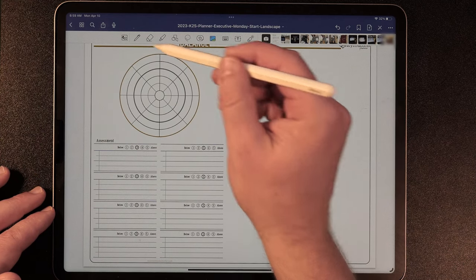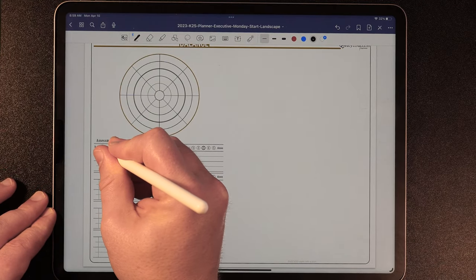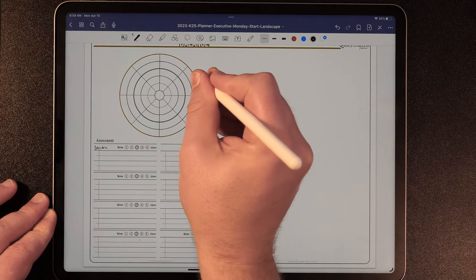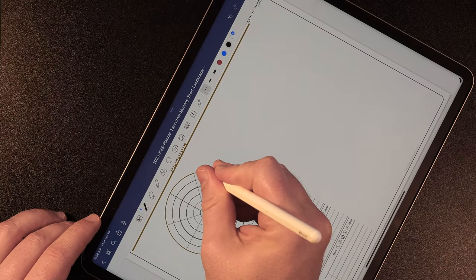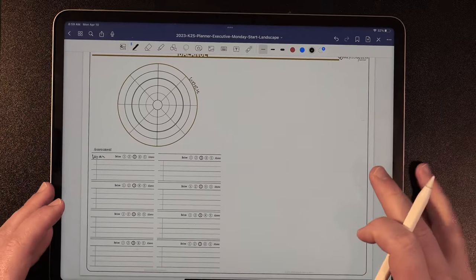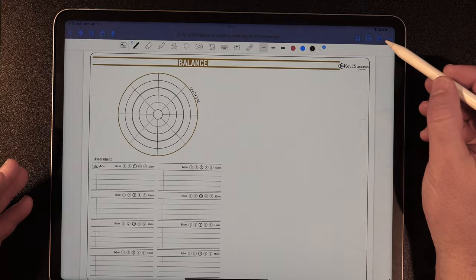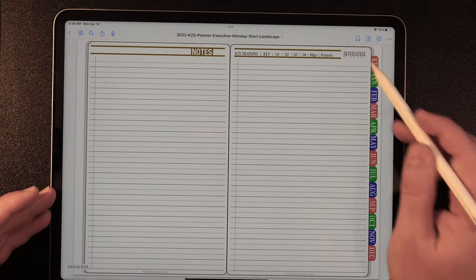One thing different with GoodNotes and PDF annotations is you don't need to set it to background. I can go ahead right here and I can write in work and I can write work in here. And I'm all set to go.